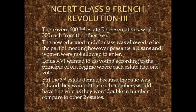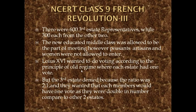Remember, this meeting was assembled to impose or increase the tax. Now, Louis XVI wanted to do the voting according to the principle of the Old Regime, where each state had one vote. The Old Regime was a powerful tool for Louis XVI — according to it, they had divine power, they could call the Estates General meeting, and they had authority over the voting style. According to this principle, each state would have one vote.